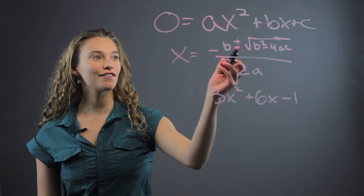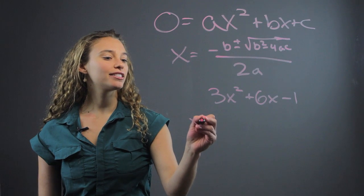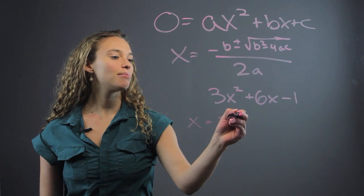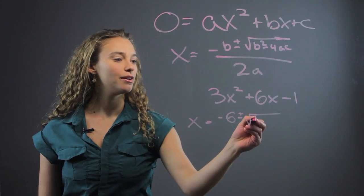Now, we're going to plug this into the formula. So, you can see our b value is 6. So, x is going to equal negative 6 plus or minus the square root of 6 squared, which is 36,